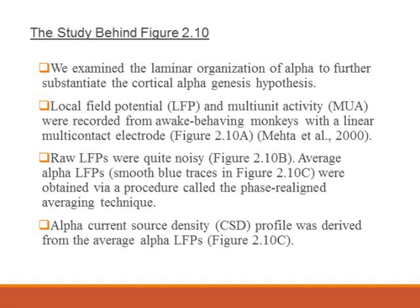We need to perform averaging in order to enhance signal-to-noise ratio. This is accomplished by a procedure called the phase realigned averaging technique. From the averaged alpha local field potential, we can then compute a quantity called current source density profile, which is able to provide more precise information regarding where activity is happening in a cortical column.